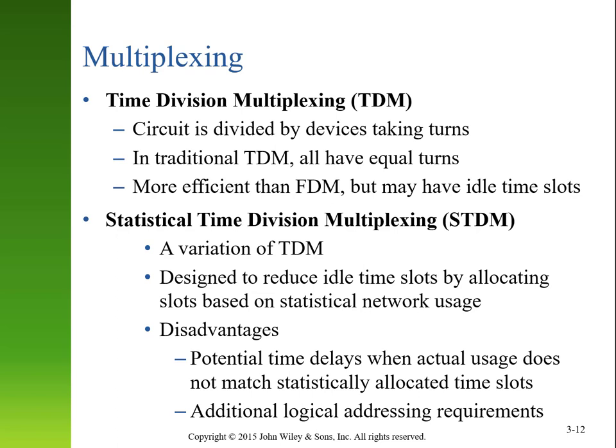A way of using time division multiplexing while avoiding wasted time slots is using a statistical model, where as devices use the network more and more, we allocate more resources for them. If a device has been quiet for a long time, we don't call on it as often. We could also program our network to give certain devices priority — maybe servers get more priority than clients. There are lots of interesting things we can do with statistical time division multiplexing, but the network devices have to be more sophisticated, which typically means more expensive: more sophistication, more flexibility, more money.